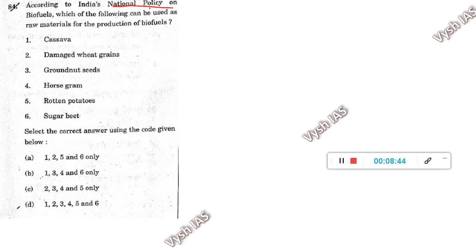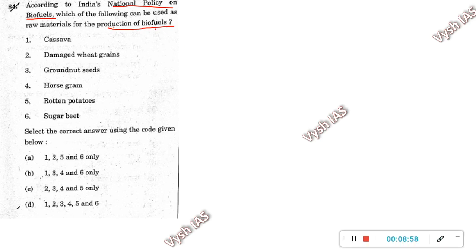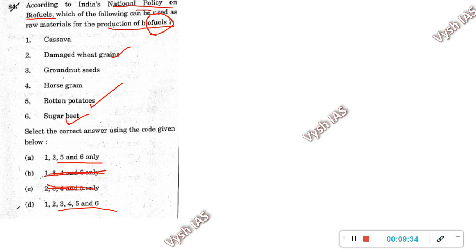Question 84: according to India's National Policy on Biofuel 2018, which can be used as raw materials for production of biofuels? Biofuels use damaged or rotten food items — damaged wheat grains, rotten potato — and sugar-related things to make ethyl, methyl alcohol. So options 2, 5, 6 should be in the answer. The two options having only those can be narrowed down. Options 3 and 4 — groundnut seeds and horse gram — are not mentioned in the National Policy on Biofuel 2018. If you knew either was absent, you eliminate three options and get the answer directly as 1, 2, 5, 6.